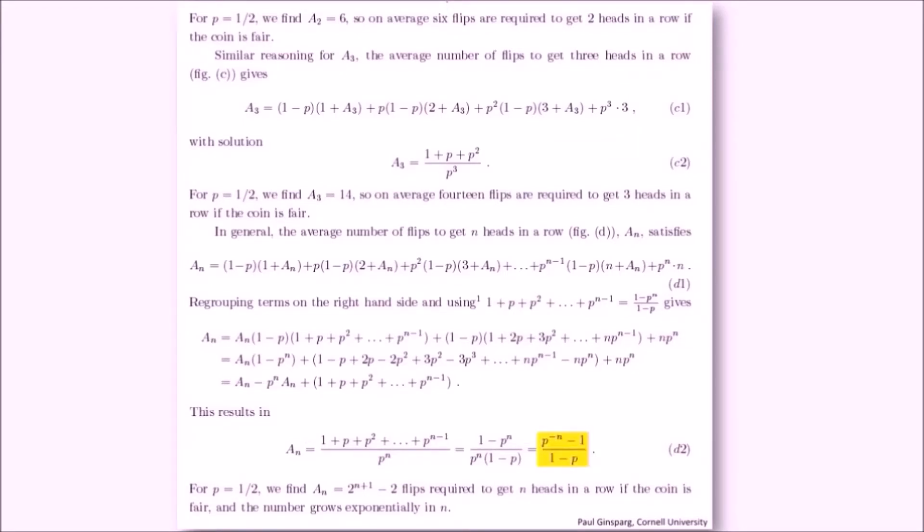Luckily, there are many resources out there that have already explored this problem for coin flips. So we can jump straight to the answer here, where p is the probability of landing on heads, and n is the target number of heads in a row. We'll let capital N represent the number of quest attempts for a level 50 prize. Then we can rewrite that coin flip formula using our questing variables. So the chance of landing on heads becomes the chance of completing a single quest, and the target number of heads becomes the target number of quests to complete.